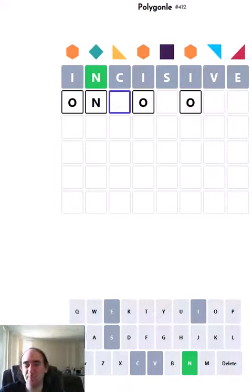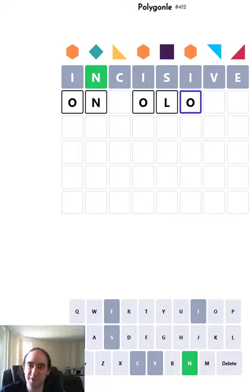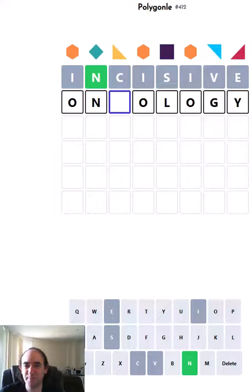An O. Onlooker almost fits, but of course the third O is just about in the wrong place. Oncology. Oncology would have been a great guess, but of course we've now ruled out a C. Is there any other ologies that work? Ontology. I think that's a word.